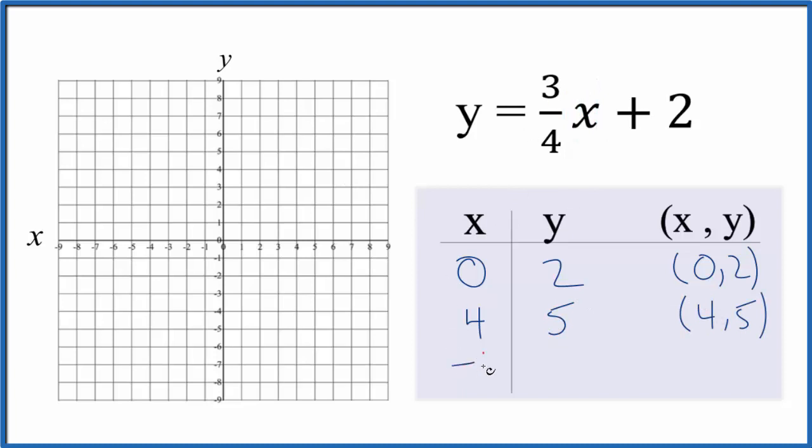Finally, I think I'll put negative four in. Because three-fourths times negative four, that'll give me a negative three. Negative three plus two, that's negative one.